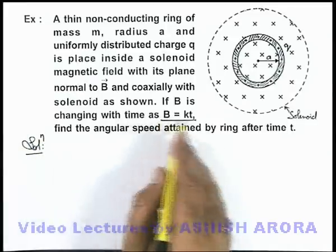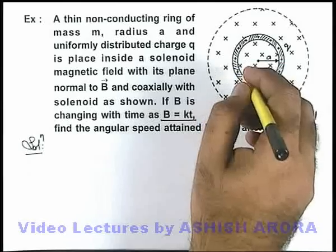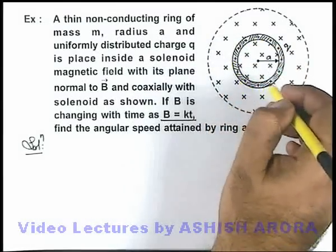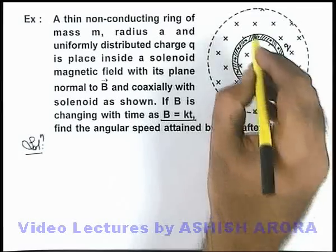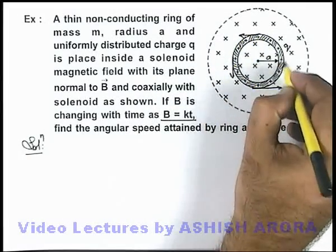Now in this situation, as magnetic field is continuously changing with time, it is increasing in inward direction. So here an anti-clockwise electric line of force will be developed and at every point the electric field will be tangential to the ring.